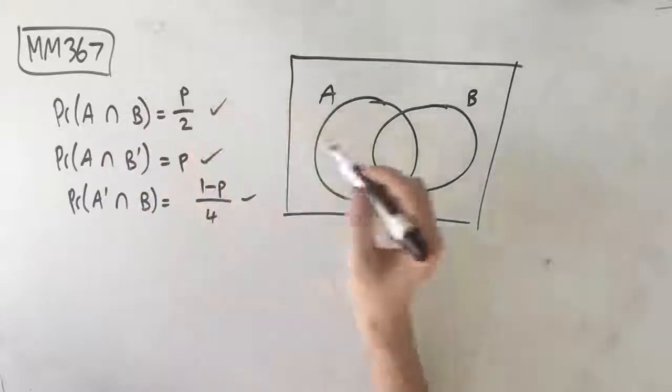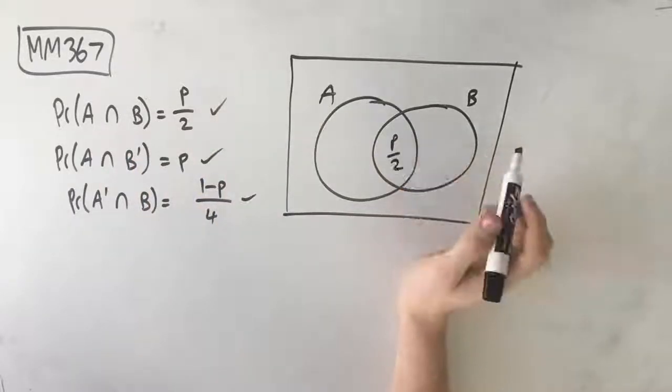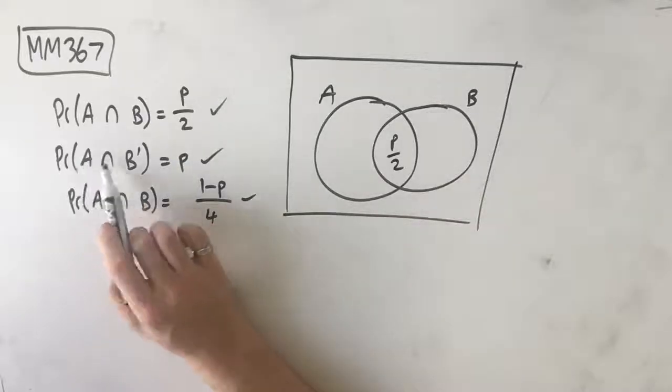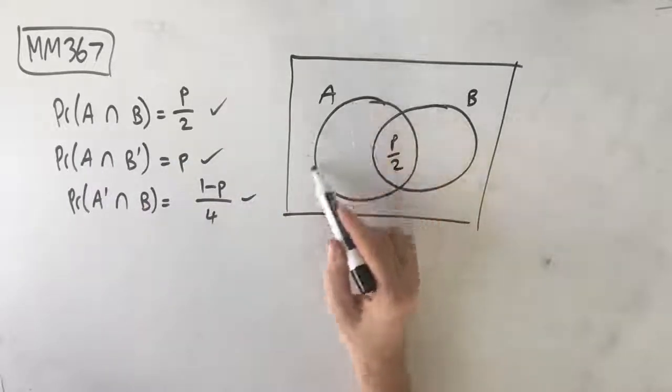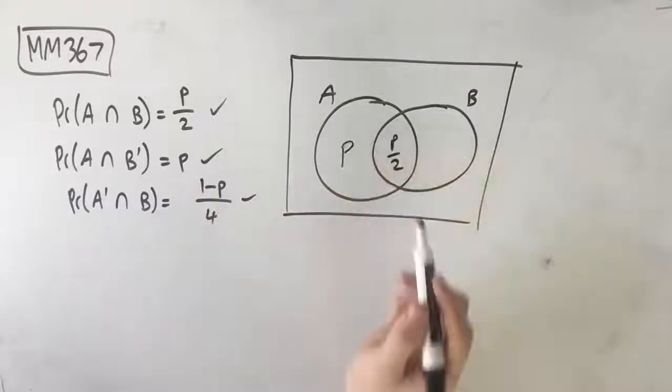The probability of A intersect B is P over 2. A intersect B is our middle area here, so P over 2. Probability of A intersect B prime is this section here, this little half moon, which is P.